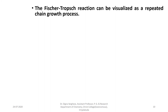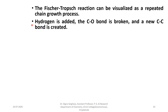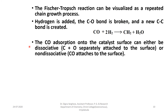The Fischer-Tropsch reaction can be visualized as a repeated chain-growth process: hydrogen is added, the C–O bond is broken, and a new carbon-carbon bond is created. The hydrogenation of carbon monoxide gives CH₂ plus water. CO adsorption onto the catalyst surface can be either dissociative (C and O separately attached to the surface) or non-dissociative (CO attached to the surface as a unit).